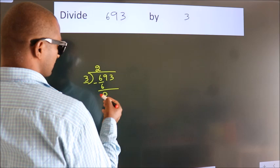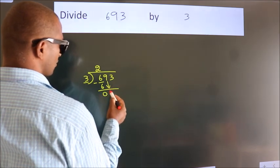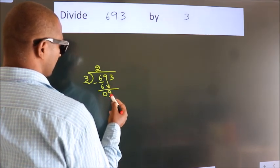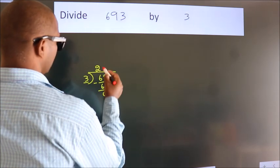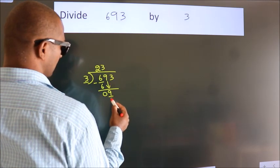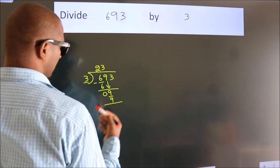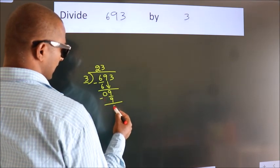After this, bring down the beside number. So 9 down. So 9. When do we get 9? In 3 table. 3 threes, 9. Now, we subtract. We get 0.